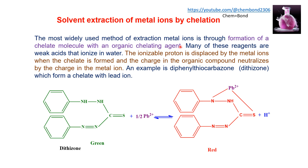The organic chelating agent acts as a weak acid and ionizes in water. The ionizable proton is displaced by the metal ion, creating a charge on the chelating group that is balanced by the metal ion.